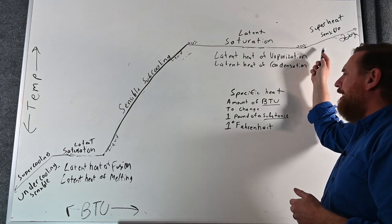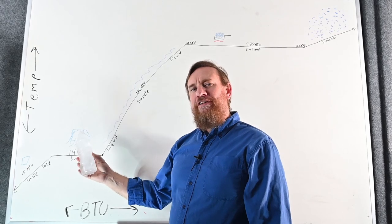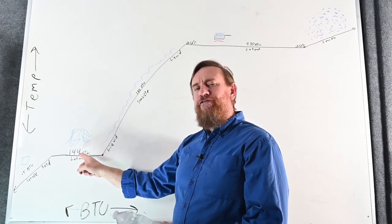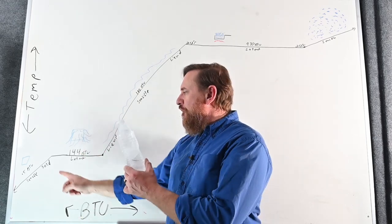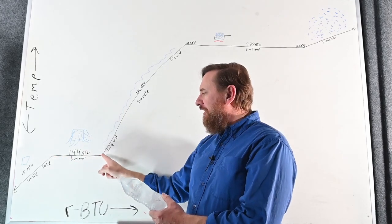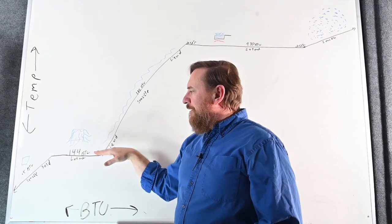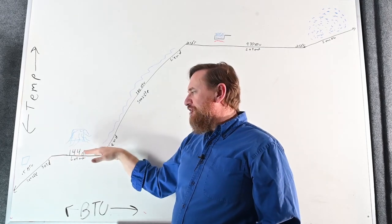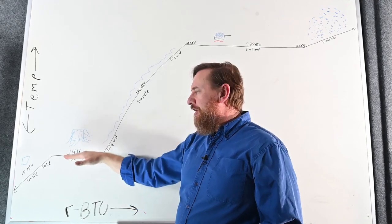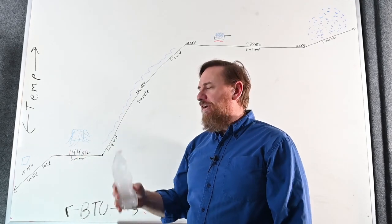Here in a minute we'll talk about what happens to our vapor and how BTUs change. In the last video, we talked about ice changing state. It takes 144 BTUs to change one pound of water from a solid to a liquid — that's latent heat. Notice this line is straight because the temperature did not change during this. We had a change in state and a BTU difference, but no change in actual temperature. It's still at 32°F.